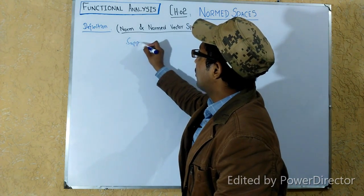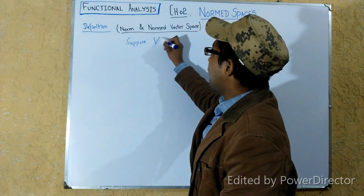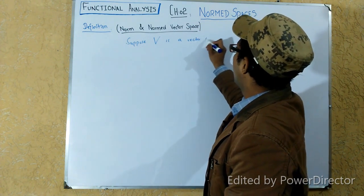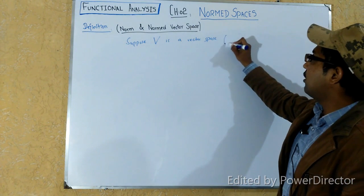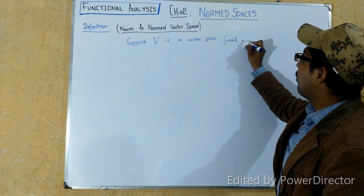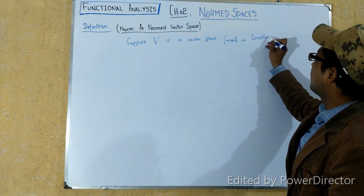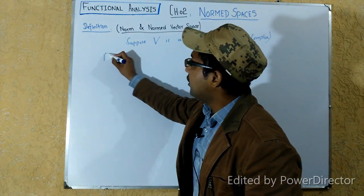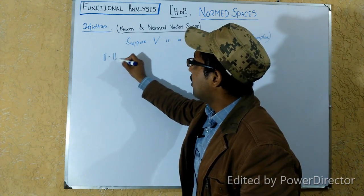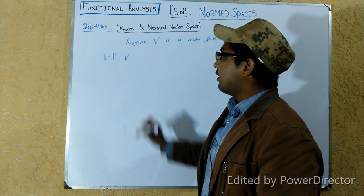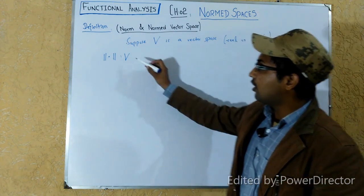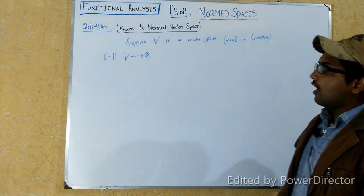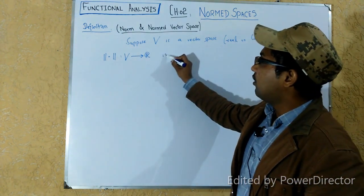Suppose that you have a vector space V. This vector space could be a real vector space or a complex vector space. Then a function, denoted with this notation, applied on this vector space takes the vectors in the vector space into the real line R. We say that such a function is called a norm on the vector space V.